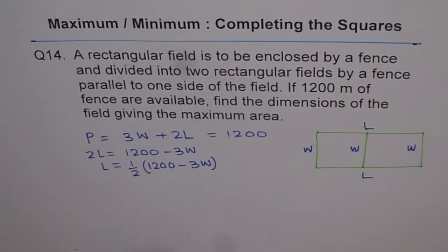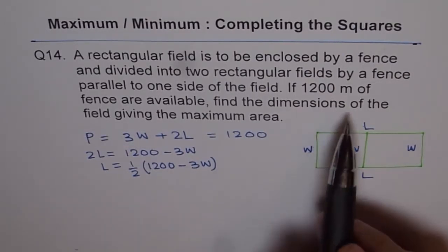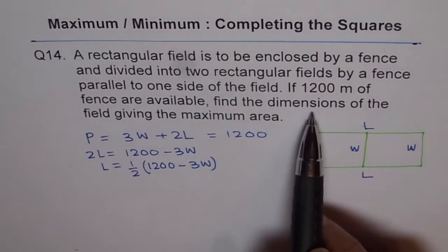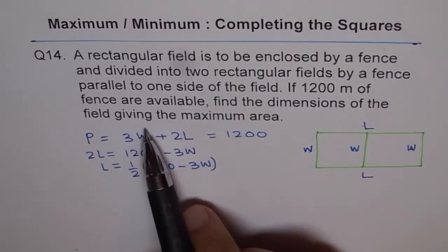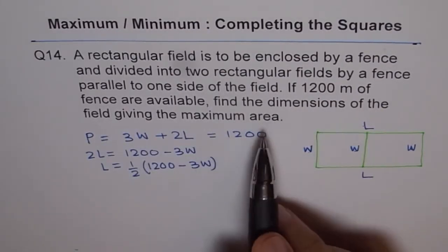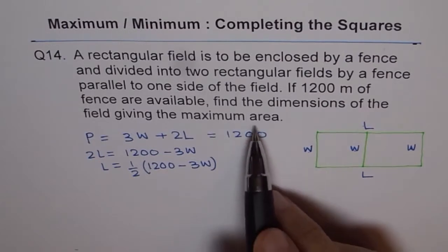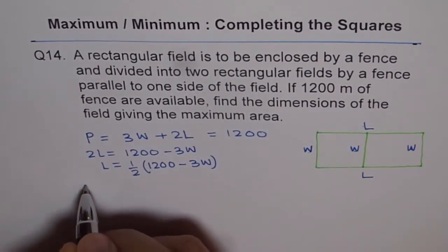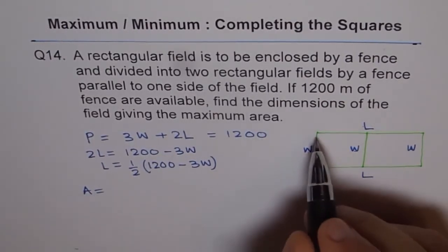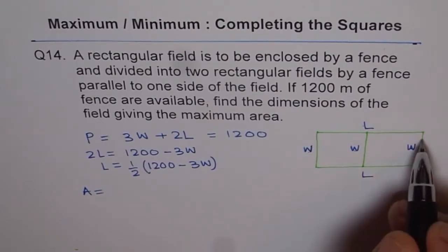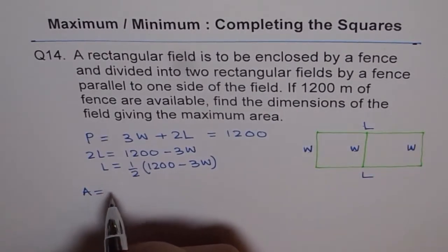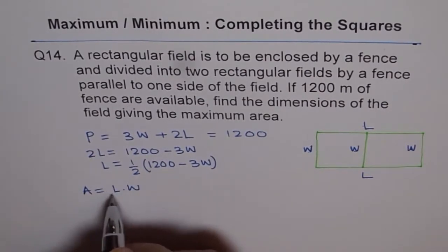Now, we want to maximize the area. It says, find the dimensions of the field giving maximum area. We want to maximize area. So what is area? Area is length into width, right? This length into width, that is the maximum area, right? So area is length into width. So let's write length times width as area.